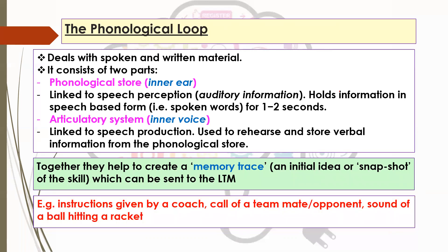Hopefully you've got things like instructions from your coach — you're hearing your coach give verbal instructions from the side of the court or pitch, and that information would go to the phonological loop. Then there'll be a process of creating this memory trace and making sense of that information. It might also be calls from teammates, possibly even calls from opponents, or even the sound of a ball hitting a racket in tennis or a bat in cricket — that information is potentially very useful when deciding on your response.